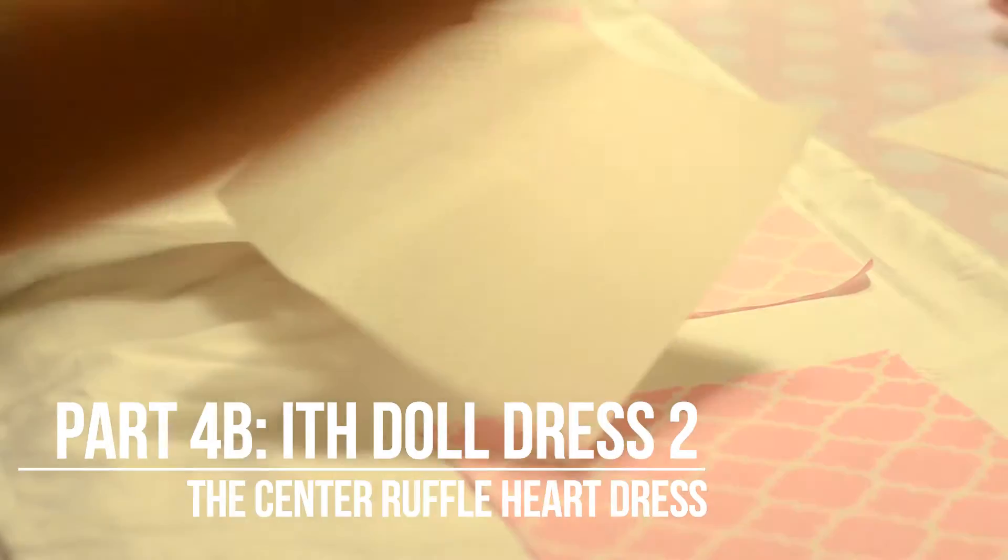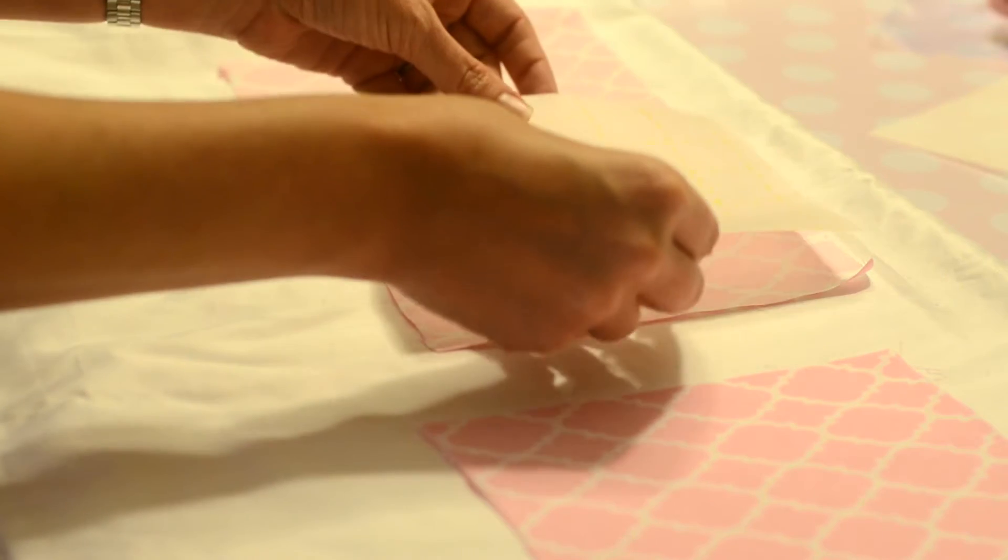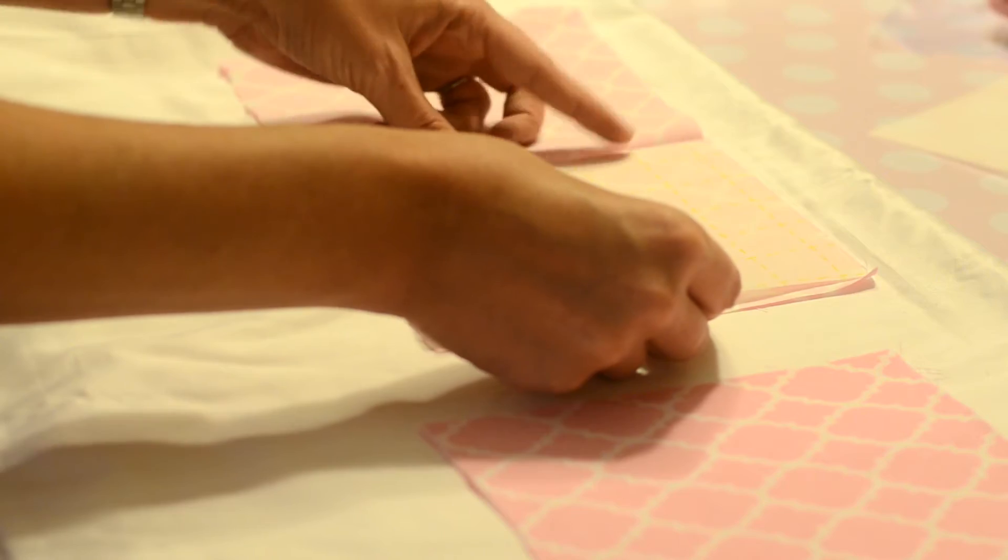As before, for regular fabric, we begin by preparing two panels slightly bigger than the dimensions of the dress 2 file.